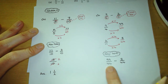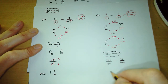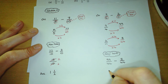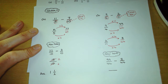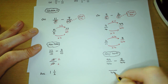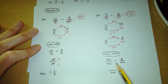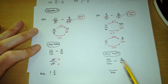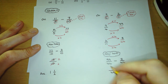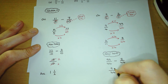Both denominators are the same so we can now write down our answer as a single fraction with that denominator of 44. That allows us to subtract the two numerators: 99 subtract 8 is going to give us 91.